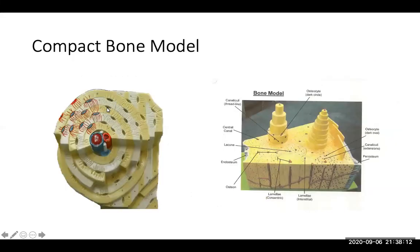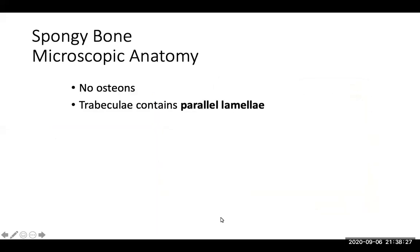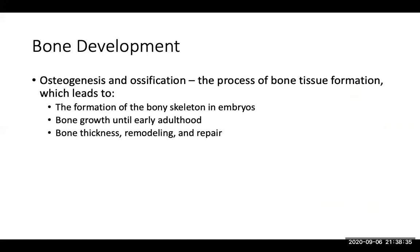Here is the compact bone model as seen in lab. You may be tested on pictures like this depending on what you're going over in lab — this model shows the same structures we just covered as they appear on a physical lab model. Spongy bone does not have osteons; instead it has sponge-like structures called trabeculae that contain parallel lamellae.